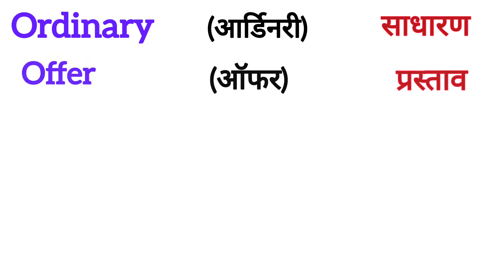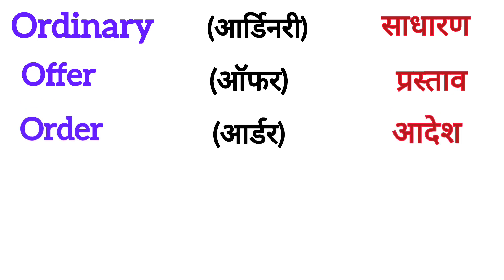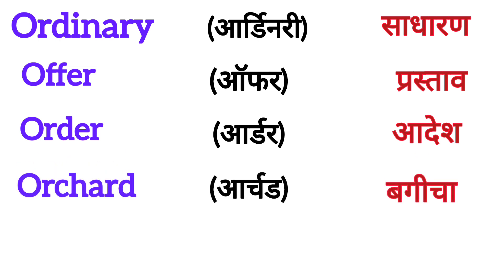Next word is OFFER. OFFER means PRASTAV. Next word is ORDER. ORDER means AADES. Next word is ORCHARD. ORCHARD means BAGYACHA.